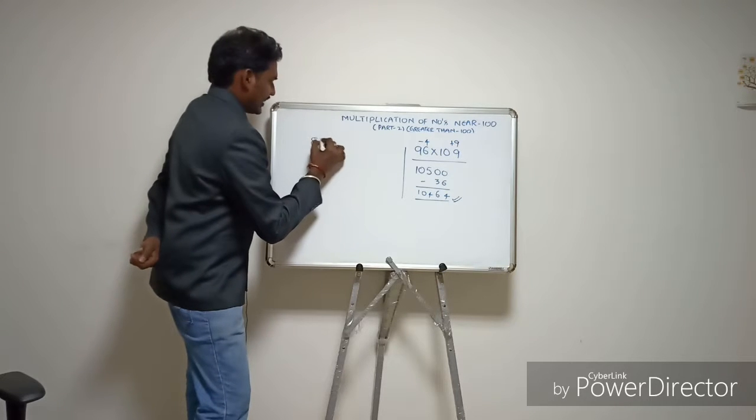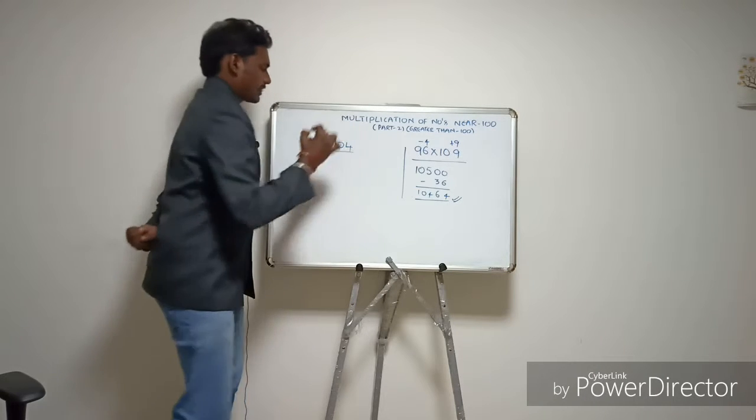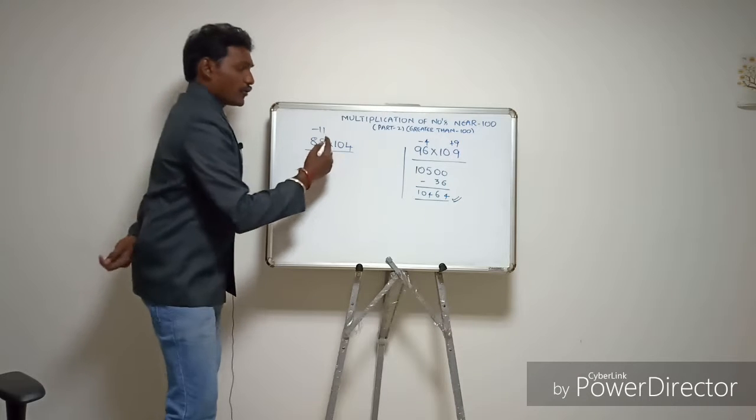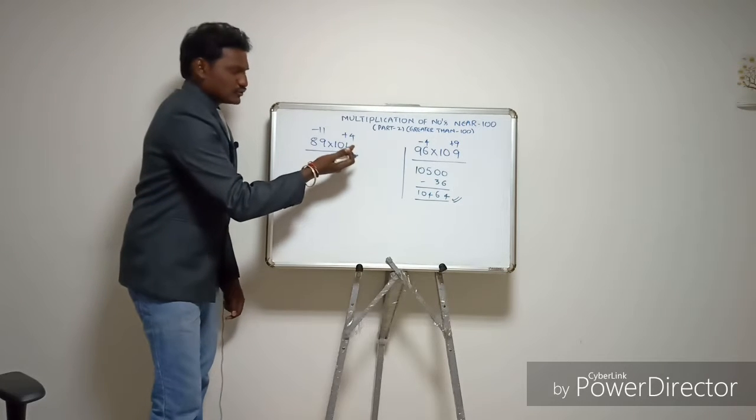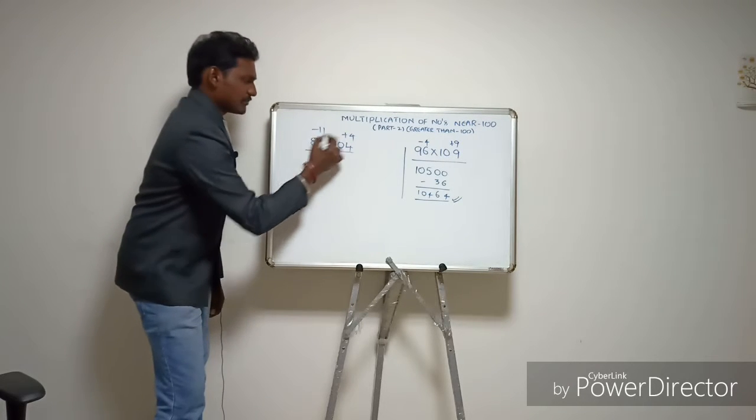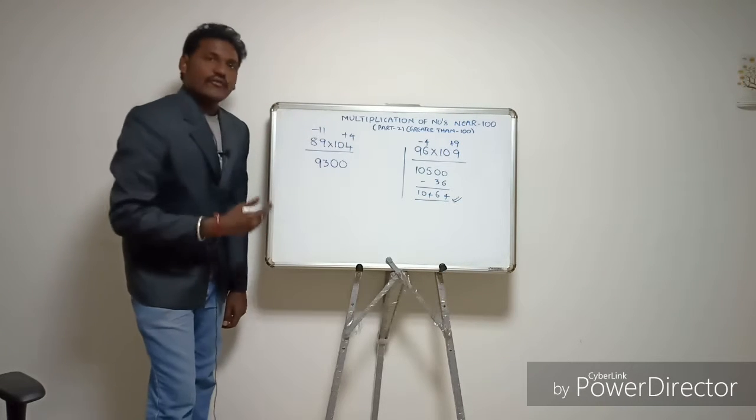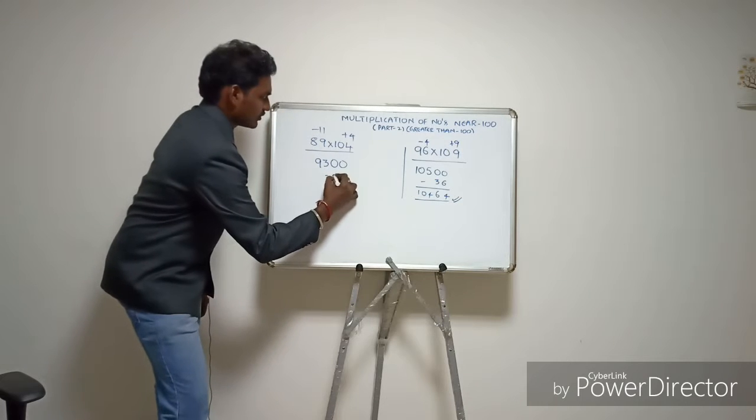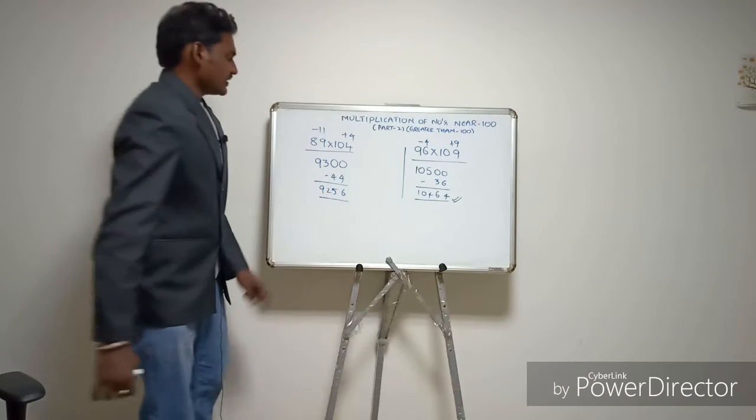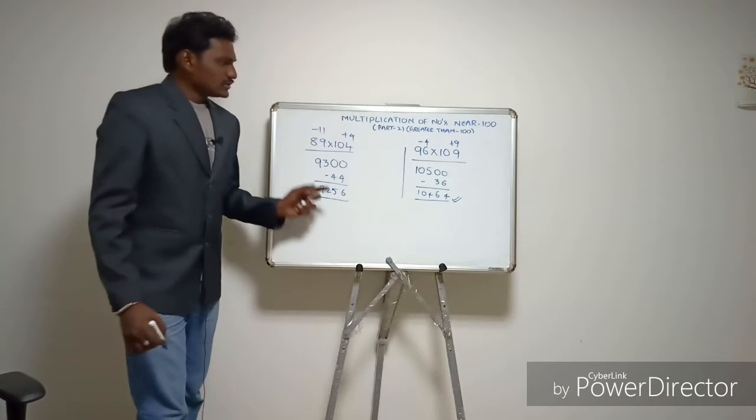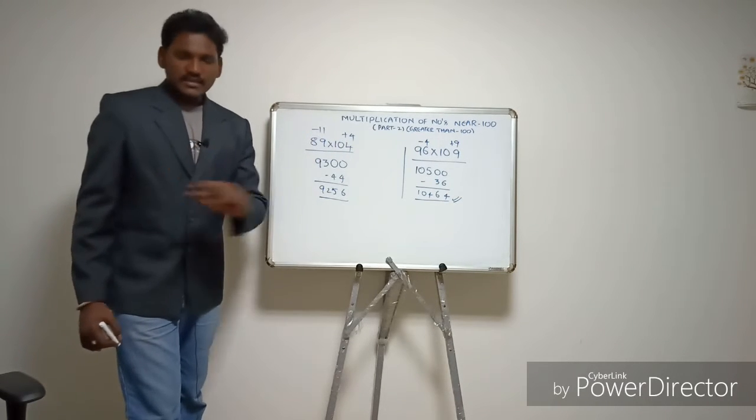Now 89 times 104. 89 is minus 11 from base 100, and 104 is plus 4. Cross-adding gives us 93. Multiplying the differences: minus 11 times plus 4 equals minus 44, so 9,300 minus 44 equals 9,256.